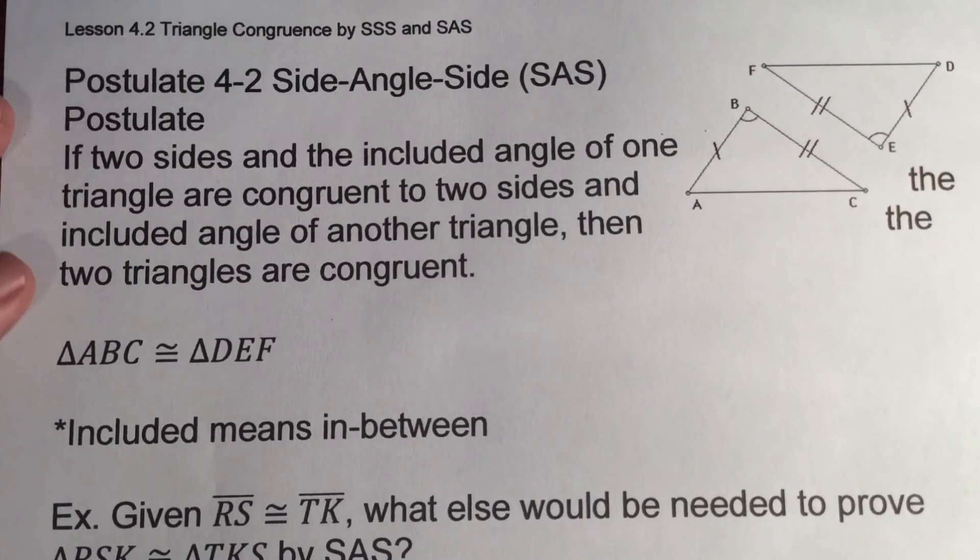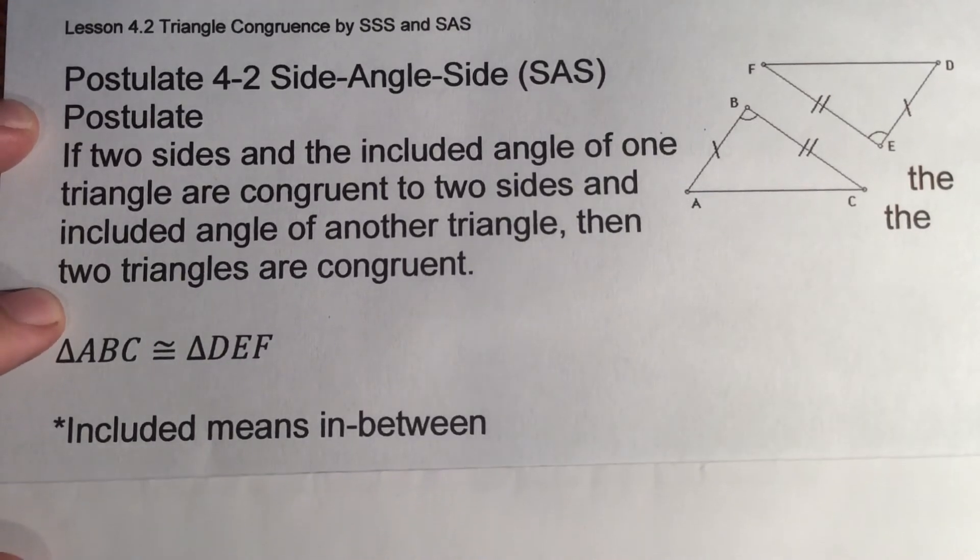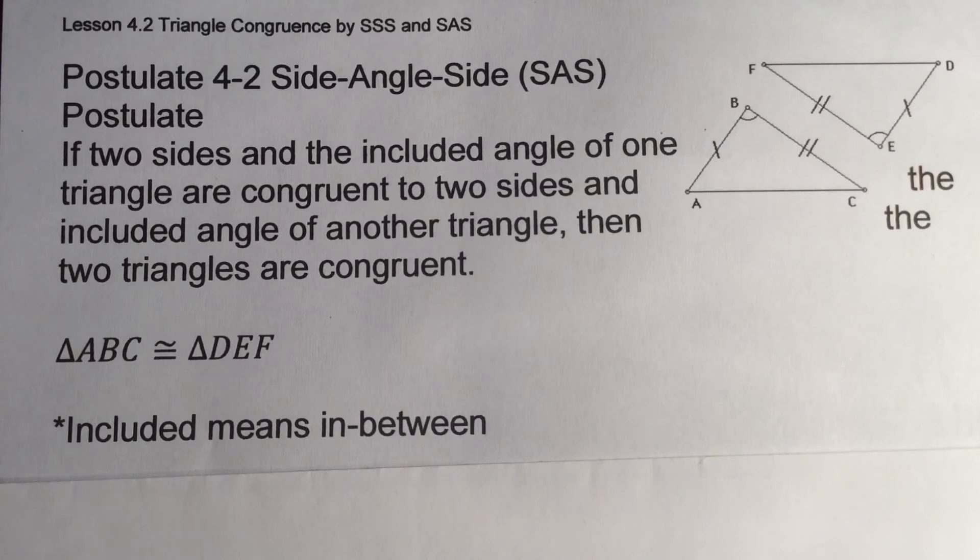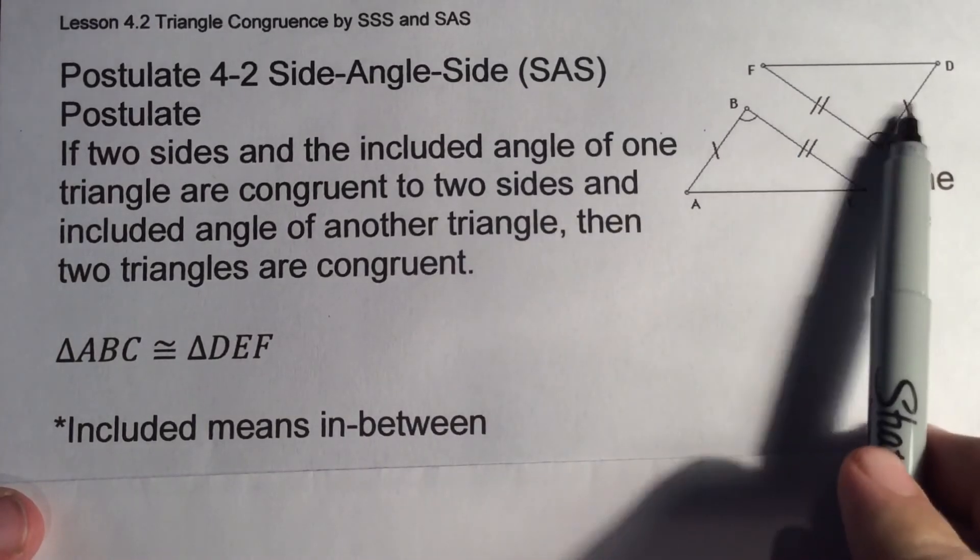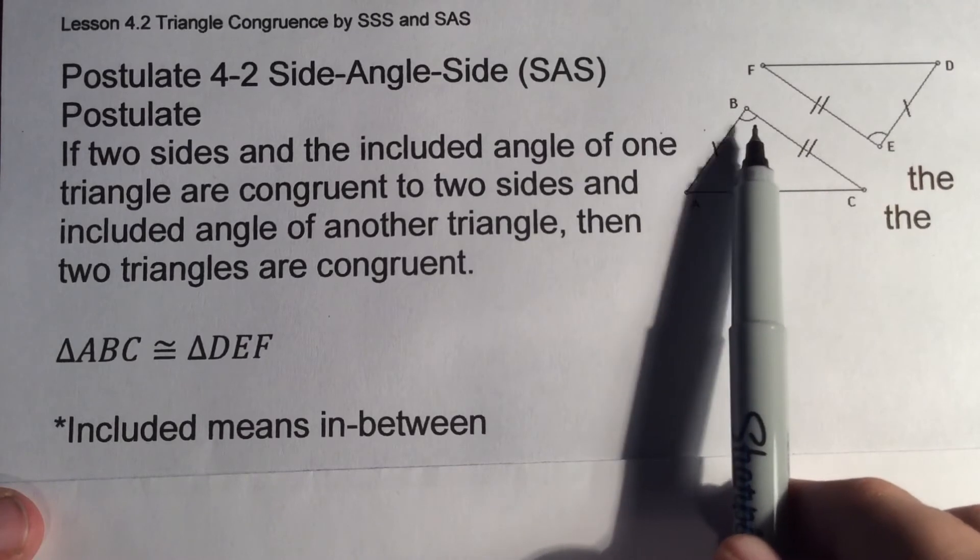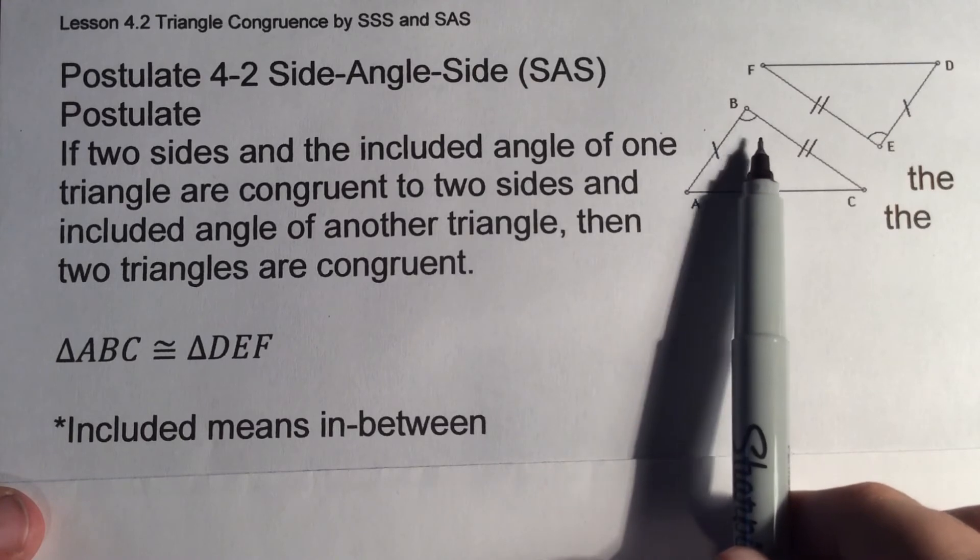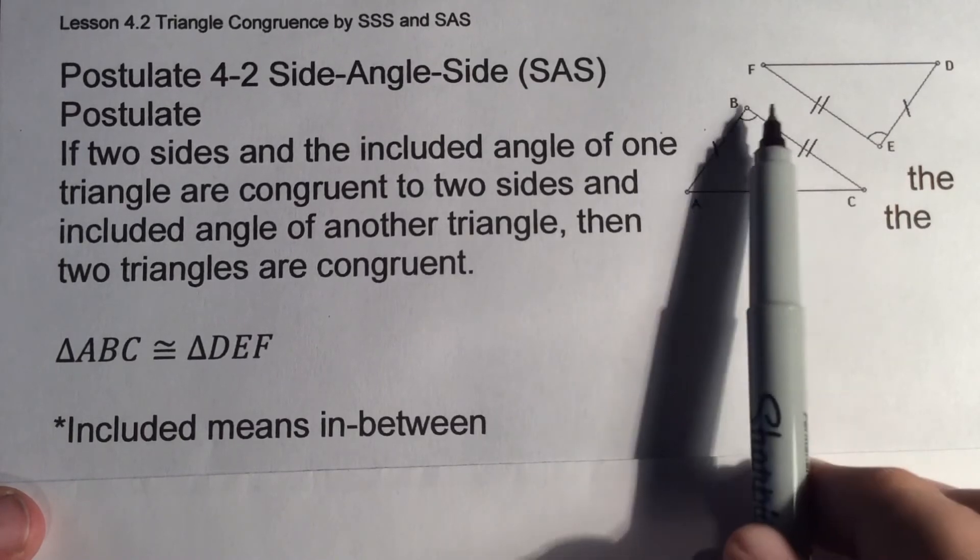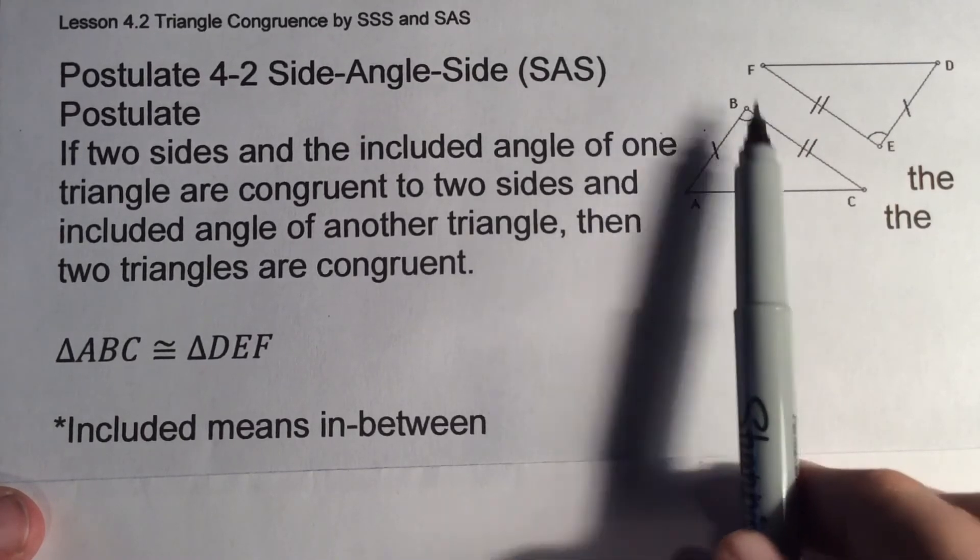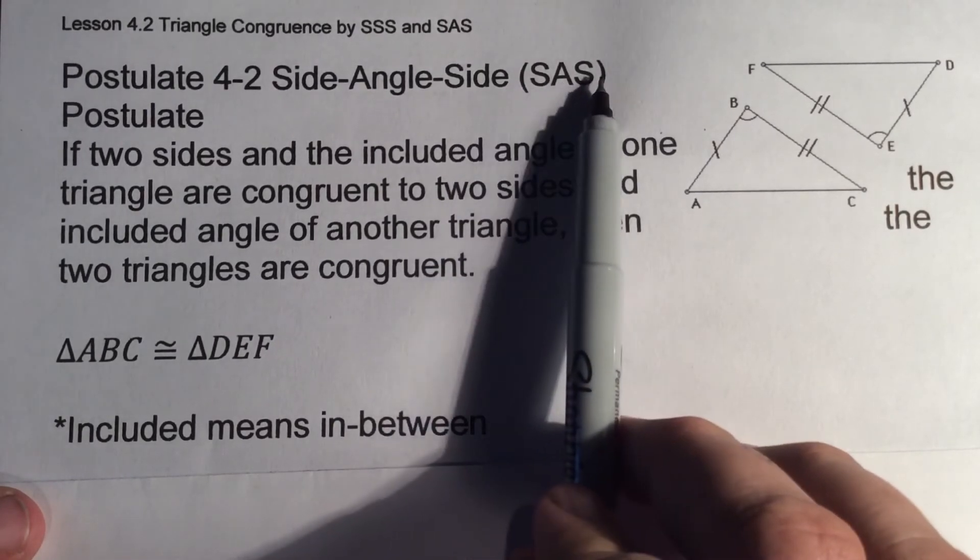Next, we have postulate 4-2, which is the side-angle-side postulate. Where this comes into play is we're going to have two sets of sides, but it's the angle in between the two sides that has to be congruent. You're going to find if it's not in between those two, it doesn't always work. It has to be in between these two in order for this to work. And that's our side-angle-side. Think there's a side, the angle in between, and then the other side.